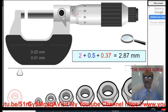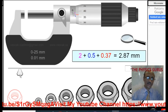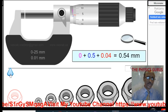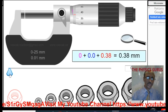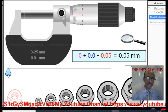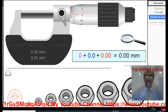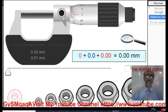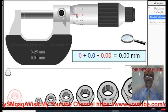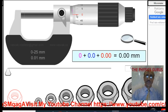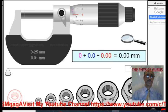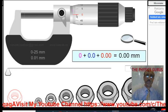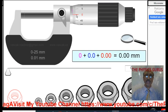Now the first thing which we have discussed is the zero error. You can see that without using any object, if this bottom line is in front of this 0 then it means that there is no zero error. So there will be no correction required. Without any object, if the bottom line 0 is in front of the circular scale 0, then we say there is no zero error.